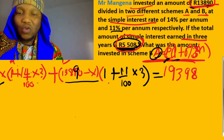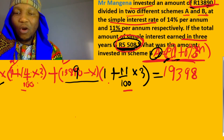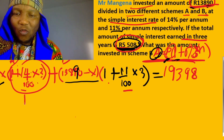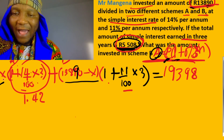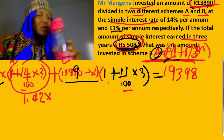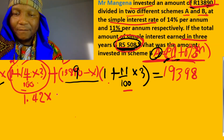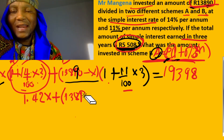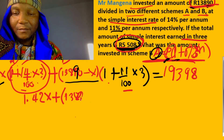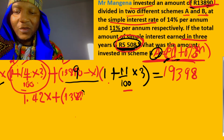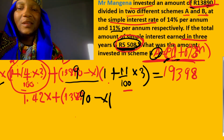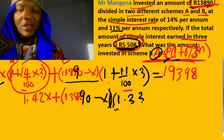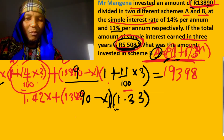Now we plug this into the calculator. When you plug Scheme A in the calculator it gives you 1.42, so x times 1.42 gives us 1.42x. Then for Scheme B, with 13,890 minus x, when you plug this in the calculator it gives 1.33.